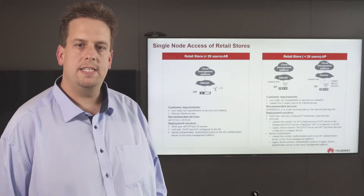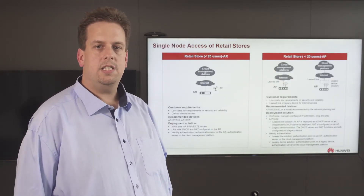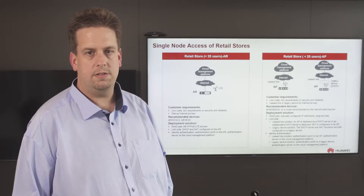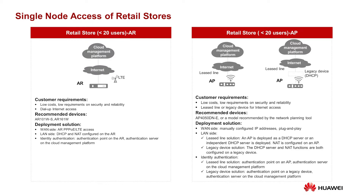Let's look at deployment scenarios. Cloud Campus supports single-node scenarios — for example, in a retail store or small branch office, just with a single access router, the uplink can be DSL, 3G, LTE, or even Ethernet connection to the Internet, which can also be combined with Wi-Fi access. Even in these very small deployment scenarios, Huawei Cloud Campus provides full management and comprehensive authentication capabilities.